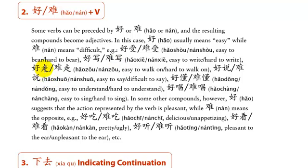好走 — easy to walk; that mountain trail is 好走. 难走 — difficult to walk on; that mountain trail up Mount Washington is 难走 — lots of rocks, water, very muddy. 好说 — it's easy to say. 难说 — difficult to say, meaning something uncomfortable or complicated and abstract.